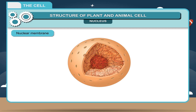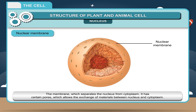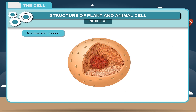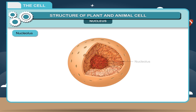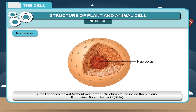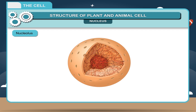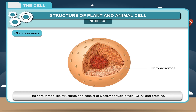Nuclear membrane is the membrane which separates the nucleus from cytoplasm. It has certain pores which allow the exchange of materials between nucleus and cytoplasm. Nucleoplasm is the transparent fluid filled inside the nucleus. Nucleolus consists of small spherical structures without membrane found inside the nucleus; it contains ribonucleic acid (RNA). Chromosomes are thread-like structures consisting of deoxyribonucleic acid (DNA) and proteins.